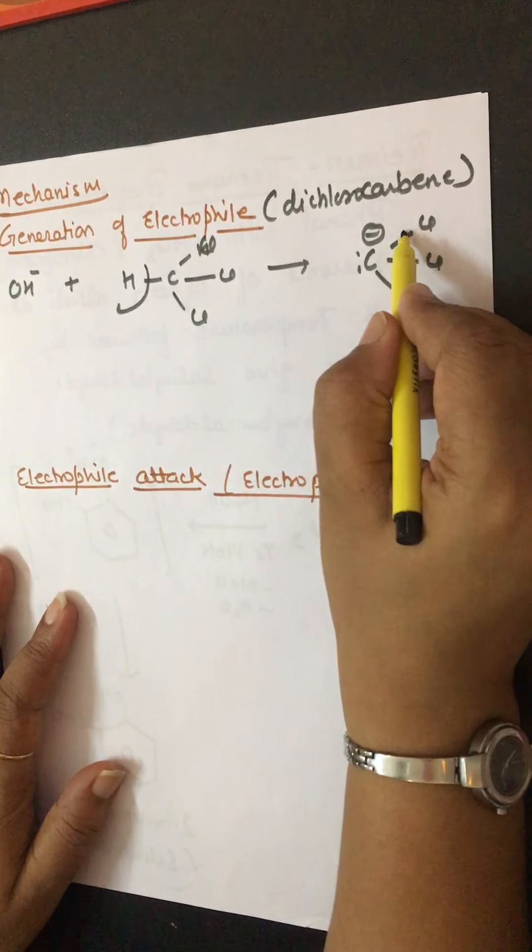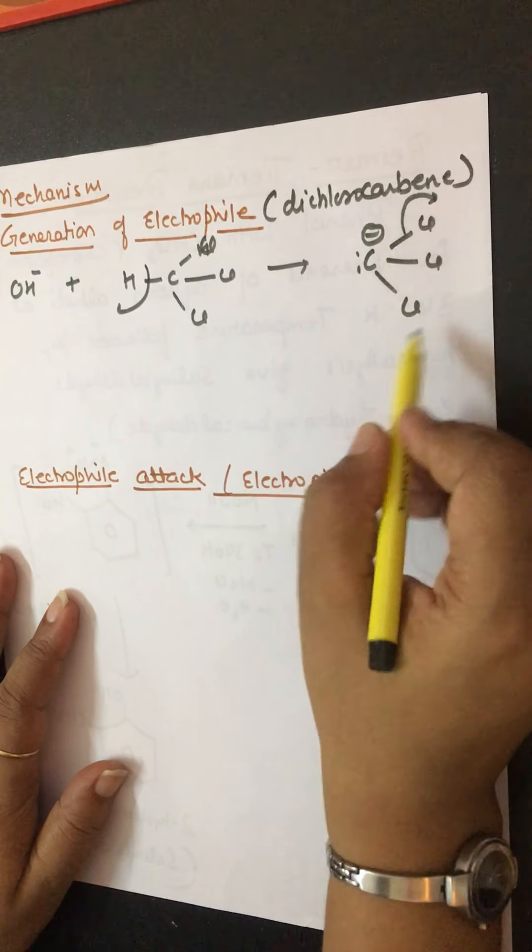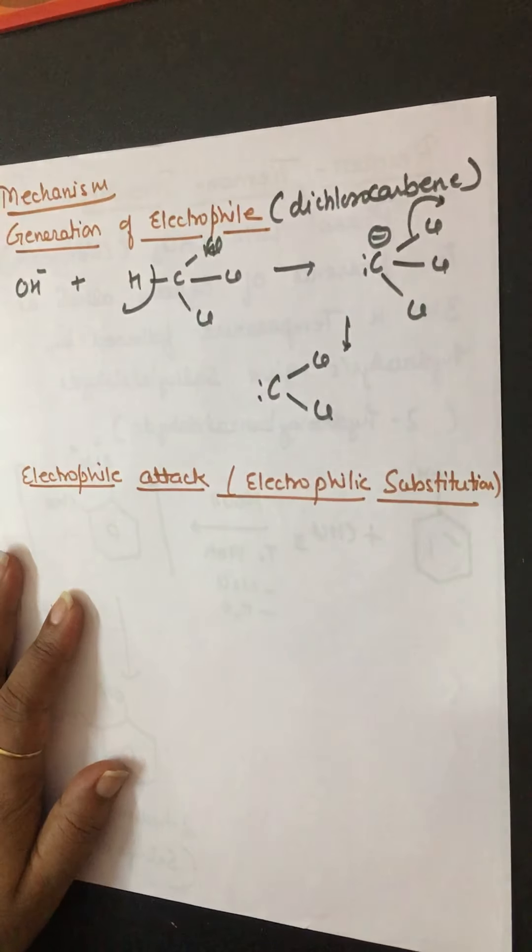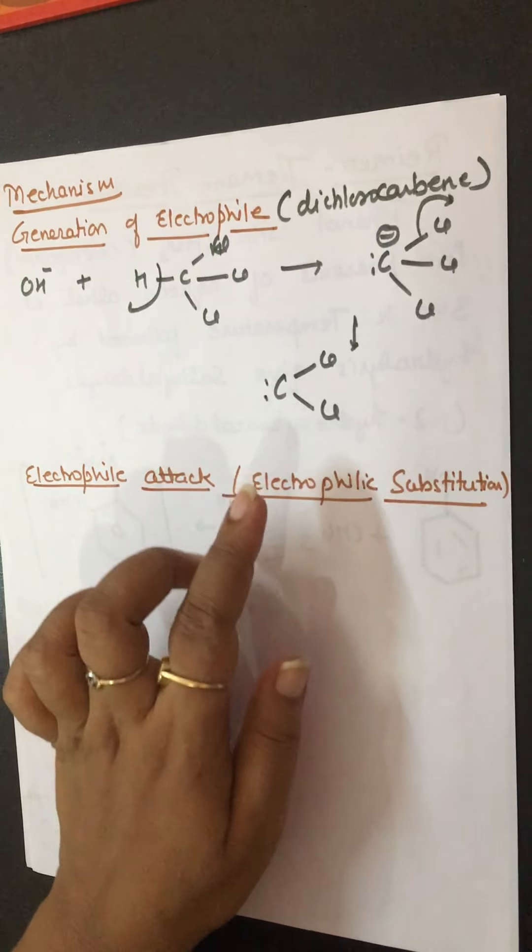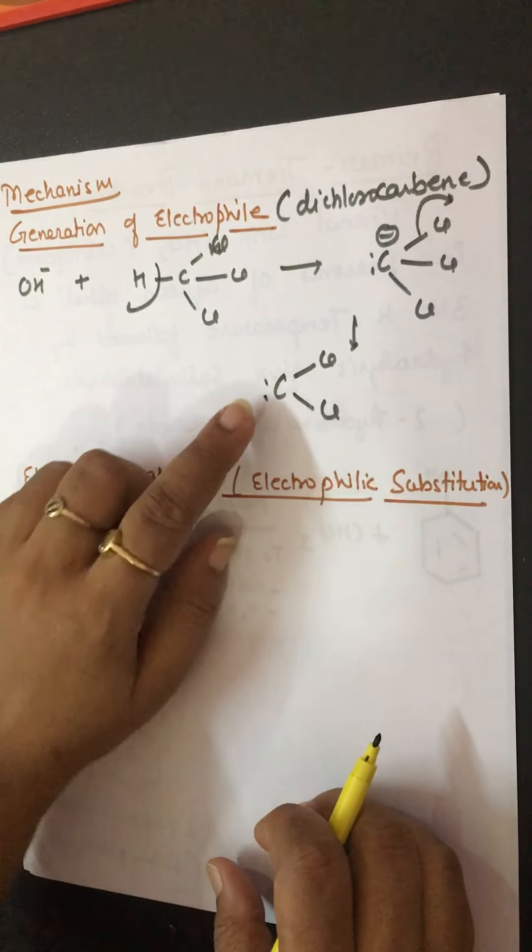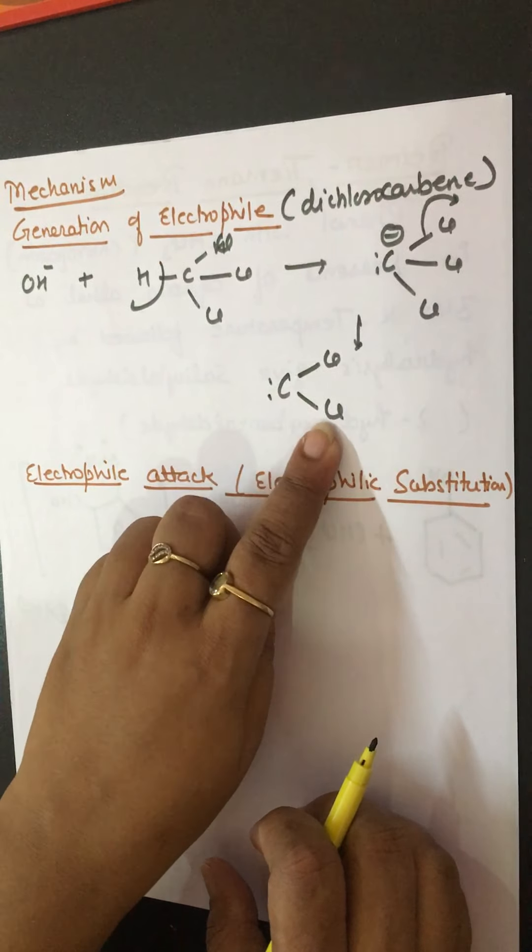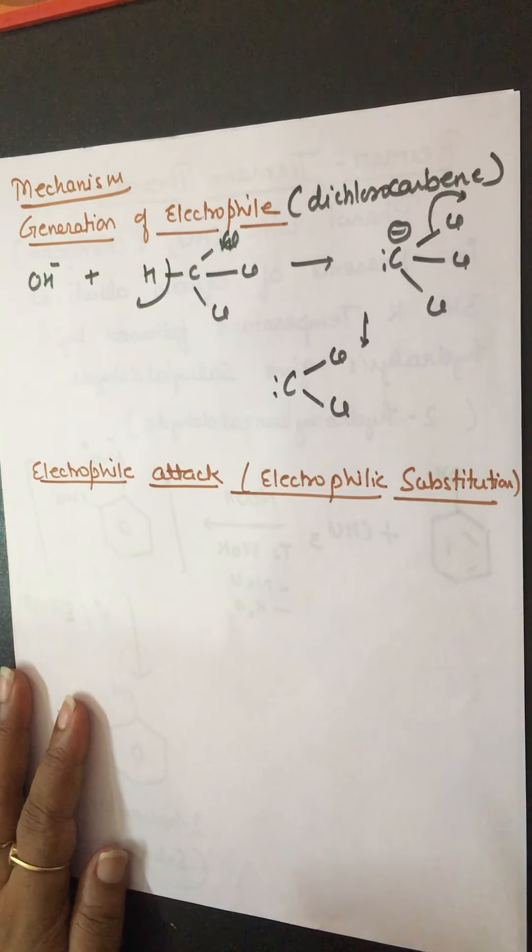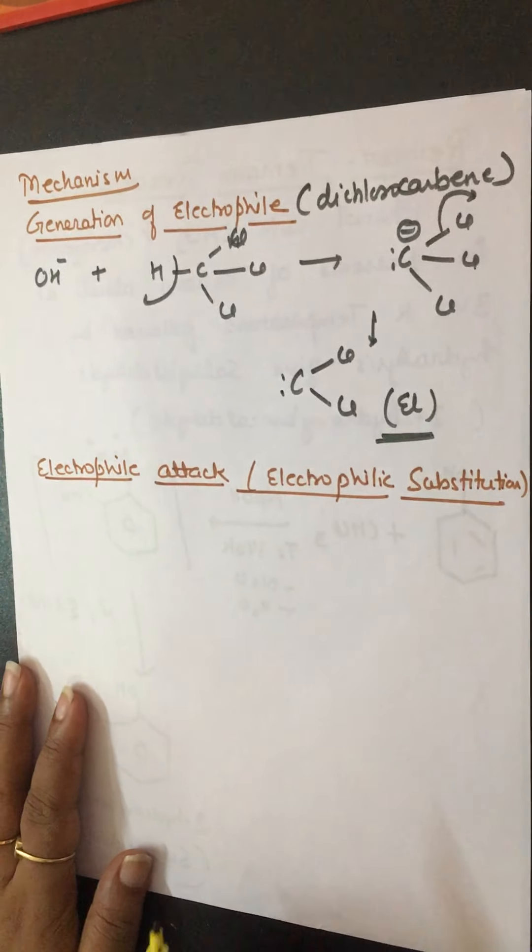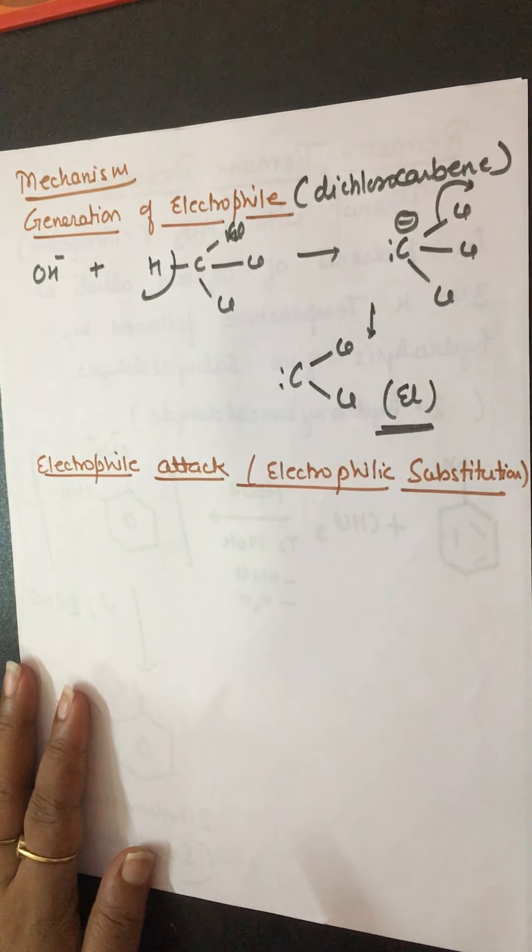Now what will happen? Cl- will separate out and it gives out dichlorocarbene. In this case, carbon valency is 6 only: 1, 2, 3, 4, 5, and 6. Its octet is not complete. That's why it acts as an electrophile. It acts as a Lewis acid. Dichlorocarbene acts as electrophile.